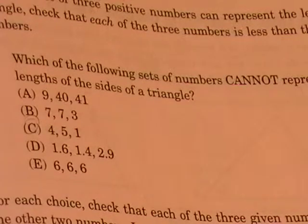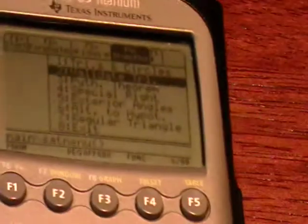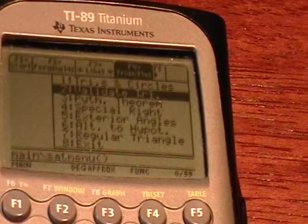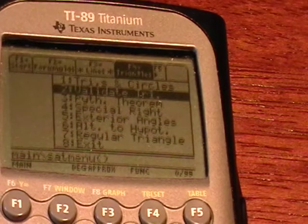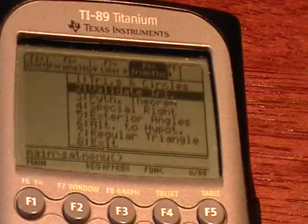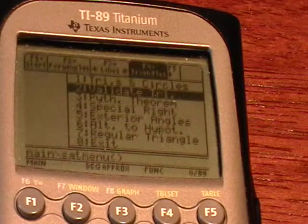So we first want to recognize that this is a problem that requires the validation of a triangle, and we want to pull that up under the Triangles tab of the SAT Operating System, and that is item number two. So we're going to hit Enter.